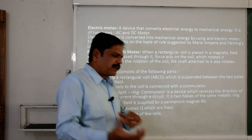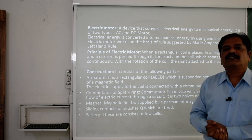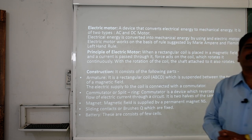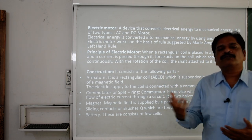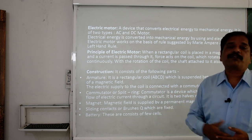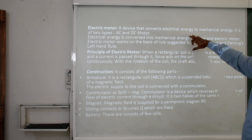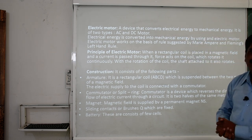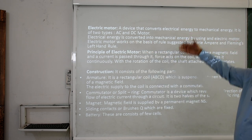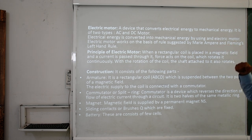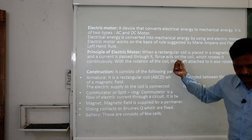Using Fleming's left-hand rule, we discuss the electric motor, which is very important in modern life. It is used to run fans, computer disks, microwave ovens, and to pump water. What is the electric motor? A device that converts electrical energy into mechanical energy. It is of two types based on the nature of electric current: AC or DC. This motor works on the basis of the rule suggested by Ampere and Fleming's left-hand rule.